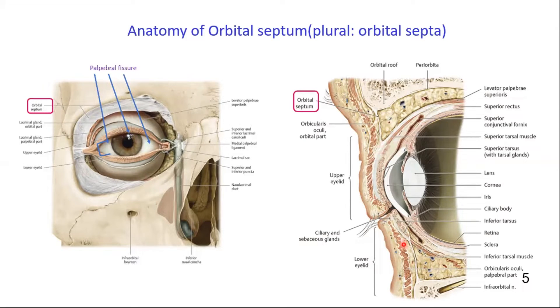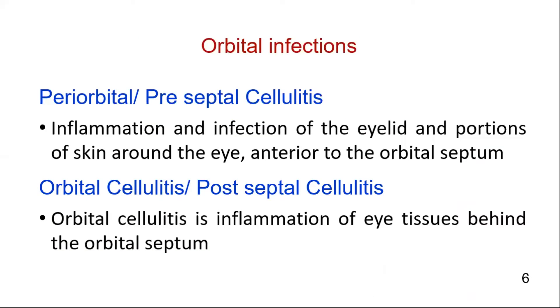And inferiorly, this is the orbital septum and it inserts into the inferior tarsal plate.